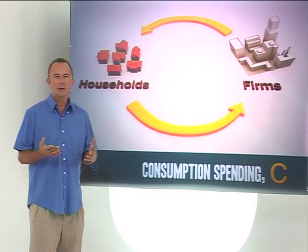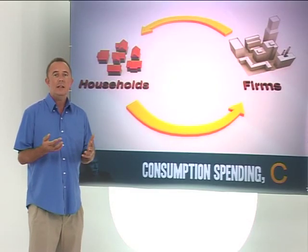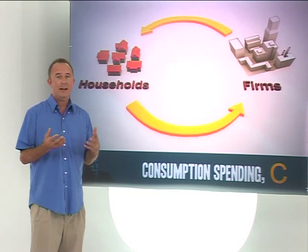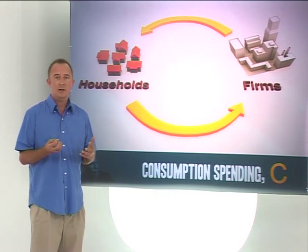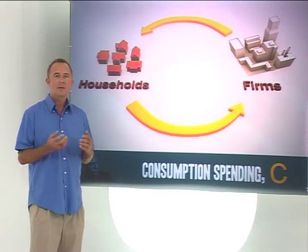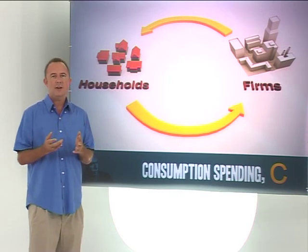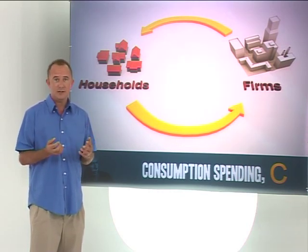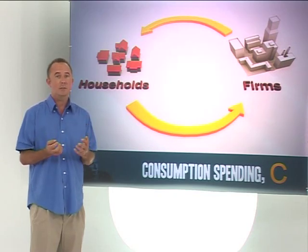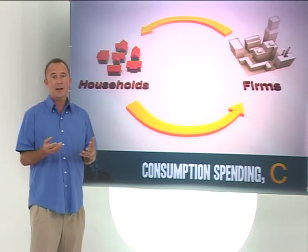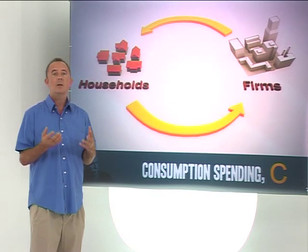Using our circular flow model, we see that households derive income by making factors of production that they possess available to firms. Firms then use these factors of production to produce goods and services. In return for the use of these factors of production, firms pay households, and this payment we know as income.